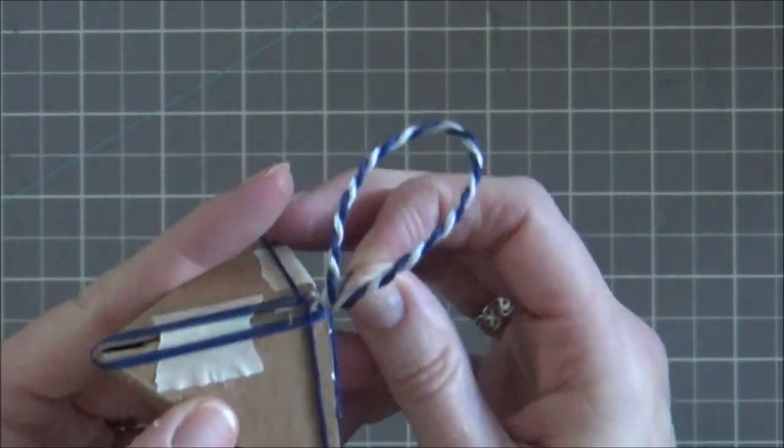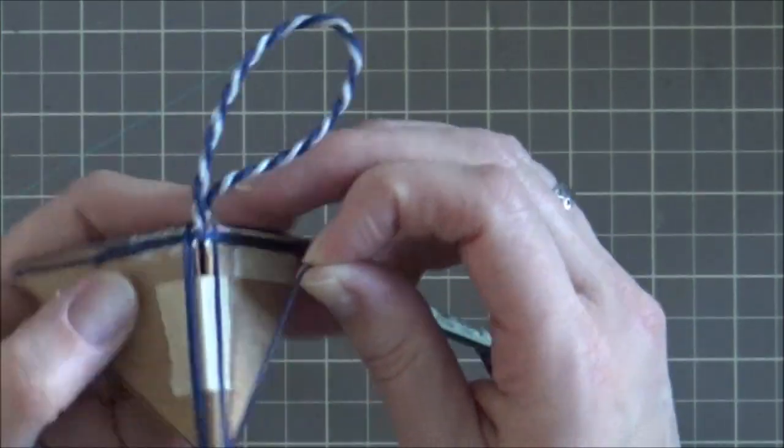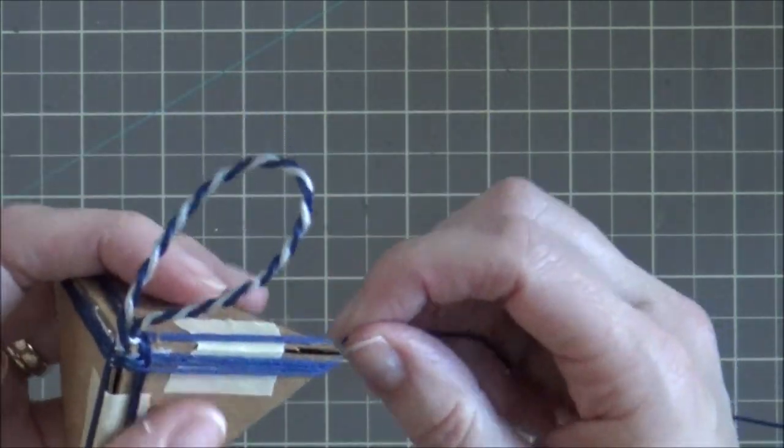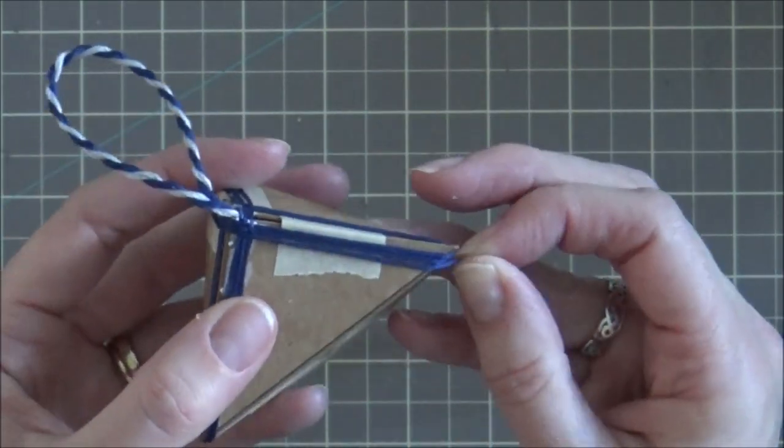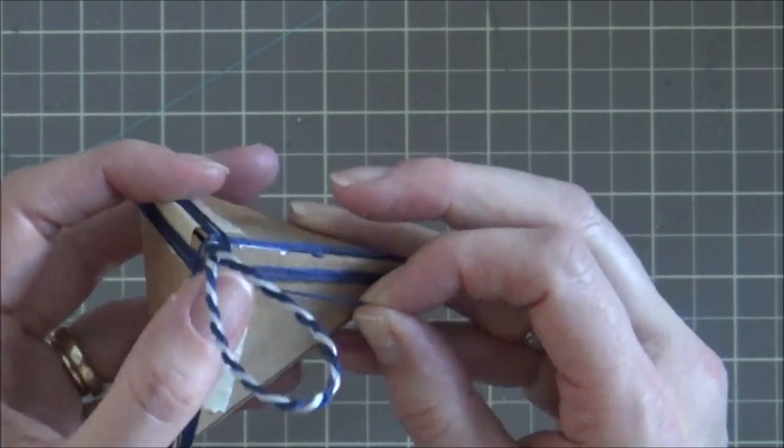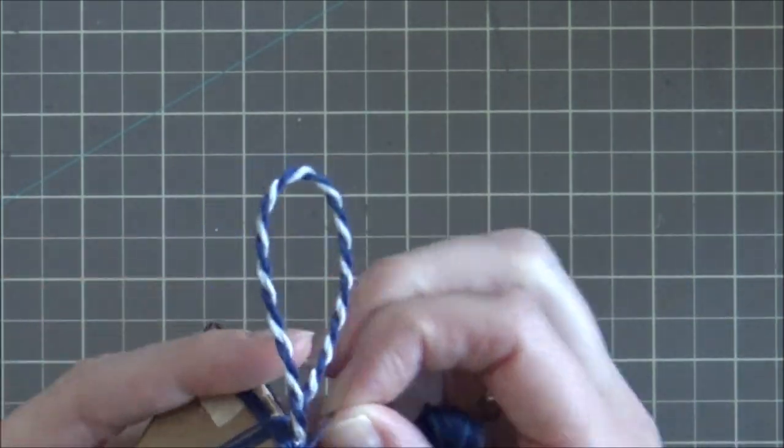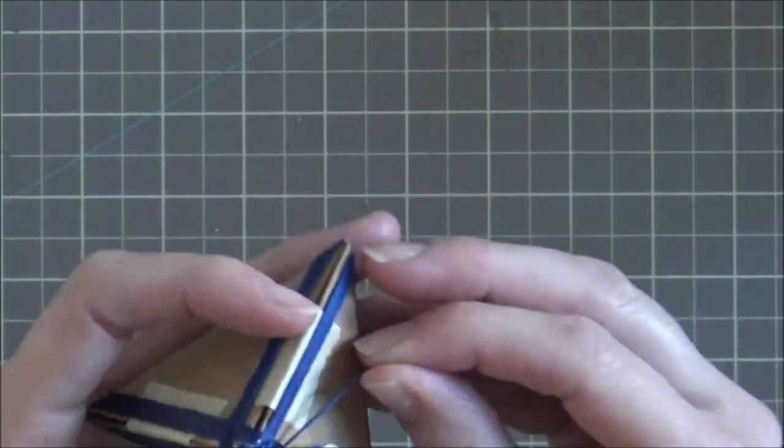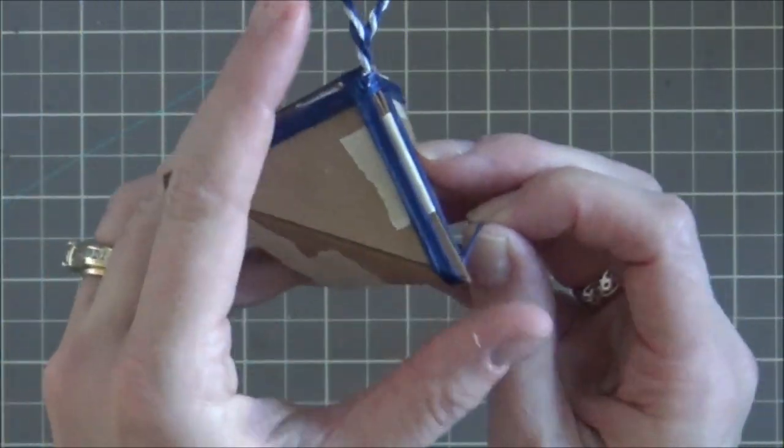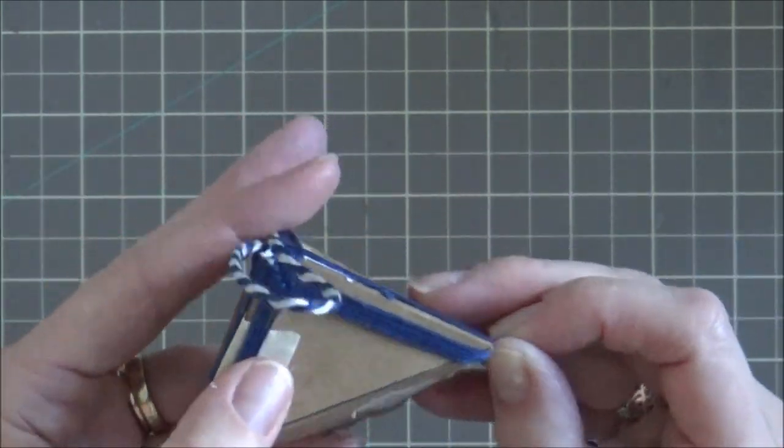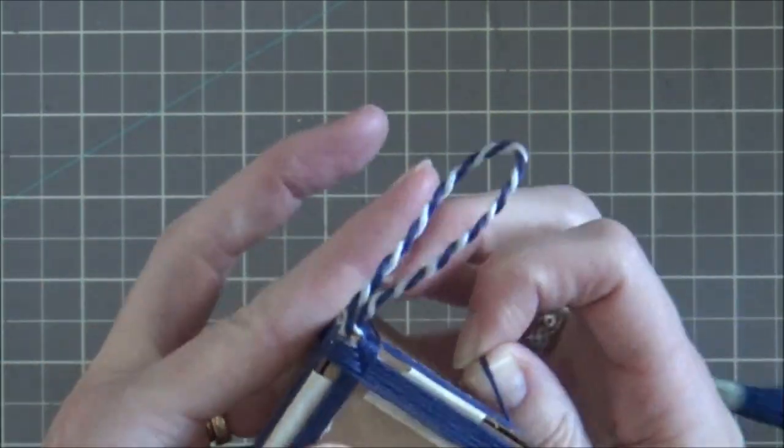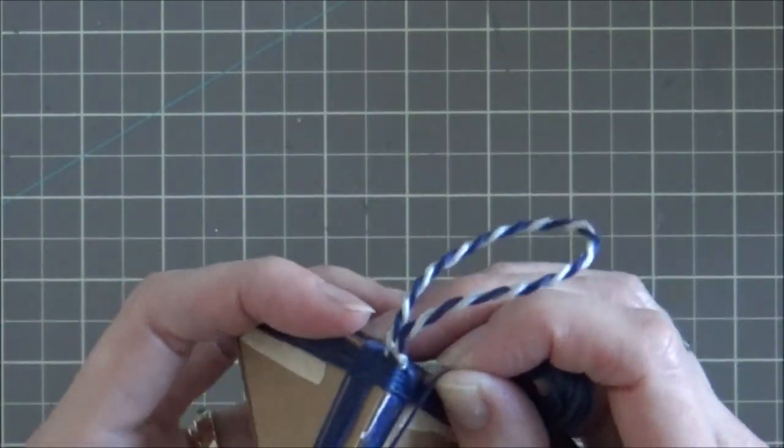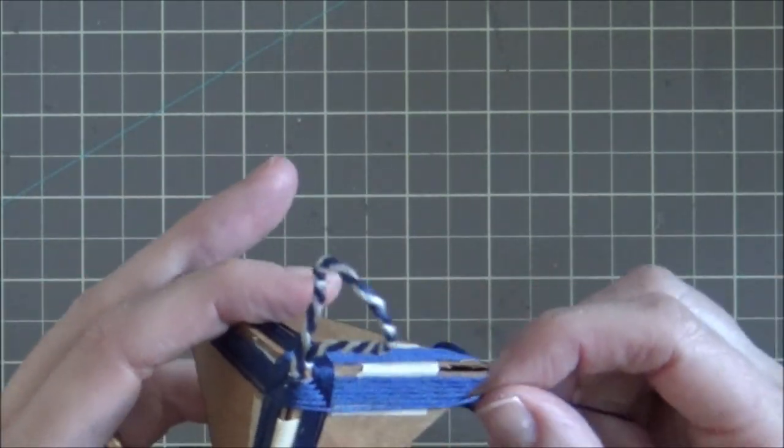I'm going to go around these points. If you ever made a god's eye when you were a kid, this is really similar. I'm just wrapping around my points and I'm going to continue this process until the entire ornament is covered in embroidery floss. For this particular style inspired by the Hogwarts schools, I'm doing a pattern of six in the main color rows and then two in my accent, four in the main and then two in the accent, repeating that pattern until I get to the end.